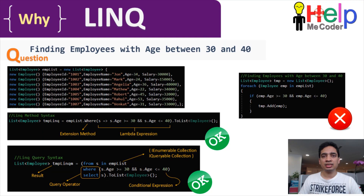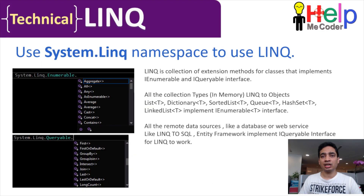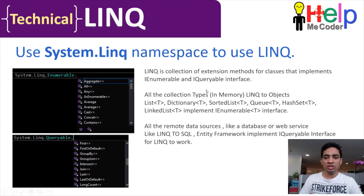You would have definitely seen from these examples the advantages of LINQ over earlier approaches, how easy and readable your code becomes after you start using LINQ. Technically, LINQ is a collection of extension methods for classes that implement the IEnumerable and IQueryable interfaces. If you type System.Linq.Enumerable in Visual Studio, you will see IntelliSense showing those extension methods.